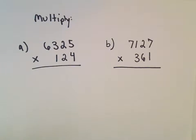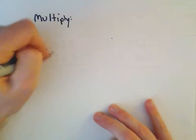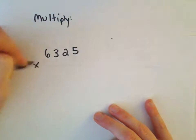So in part A here, we've got 6,325 times 124.